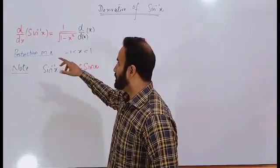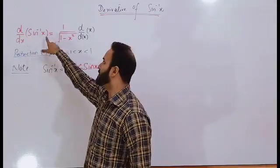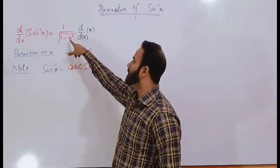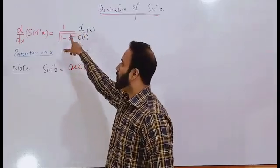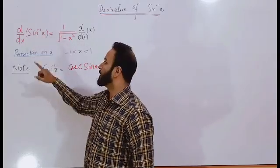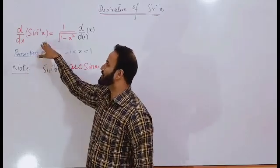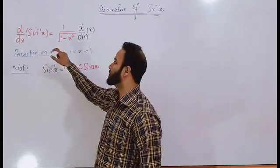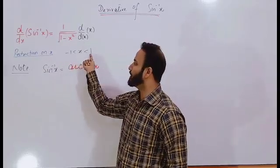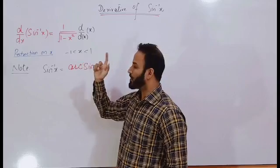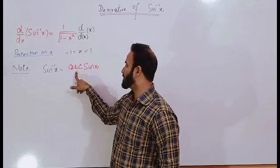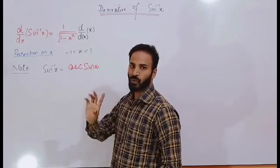The formula of the derivative of sine inverse x is 1 over the square root of 1 minus x squared, multiplied by the derivative of the value inside the sine inverse. The restriction on x is that x should be lying between minus 1 and 1. Remember students, sine inverse x can also be written as arc sine x, which has the same meaning.